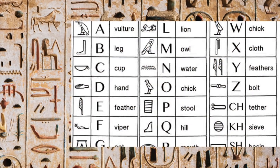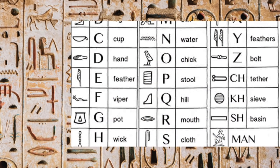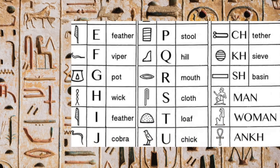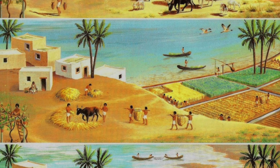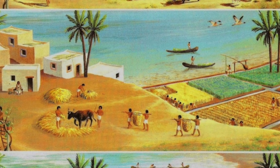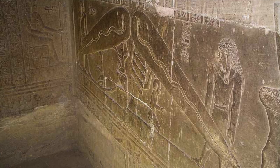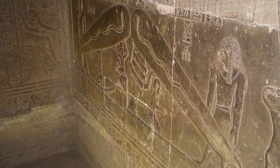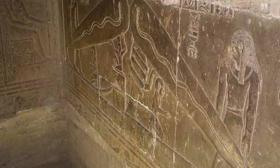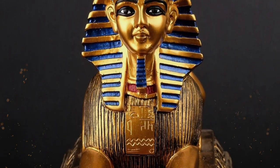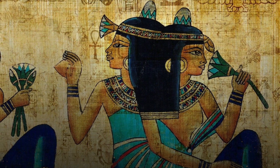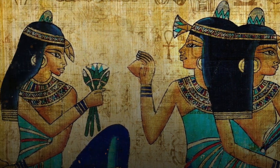This allowed them to record their history, religious beliefs and daily life in exquisite detail. The Old Kingdom was a time of great creativity and innovation. The Egyptians developed an intricate system of art and literature that served both practical and religious purposes. Sculptures and paintings were used to decorate temples and tombs, while texts were written to help guide the deceased through the afterlife.